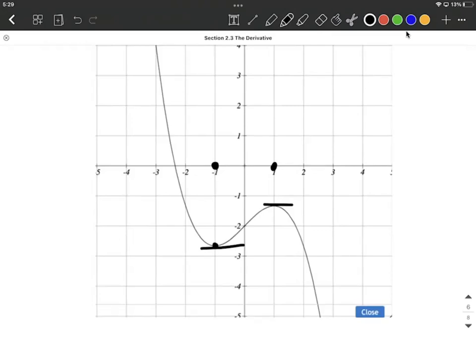Now the other thing to look at is we're decreasing on the left-hand side. That's going to correspond with negative derivatives, meaning we can only draw our derivative graph below the x-axis to the left of negative 1. We're increasing in the middle between negative 1 and positive 1, meaning positive slopes for tangent lines. So we can only draw above the x-axis between negative 1 and positive 1 for the derivative's graph.